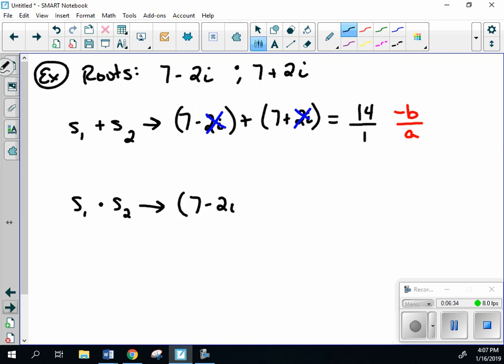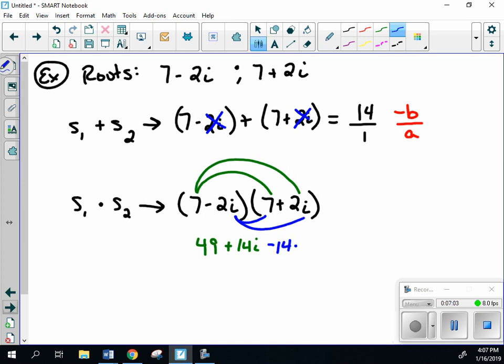We have (7 - 2i)(7 + 2i). Using distribution: 7 × 7 = 49, 7 × 2i = 14i, then -14i and -4i². The middle terms cancel, and -4i² becomes -4(-1) = 4. Together: 49 + 4 = 53.